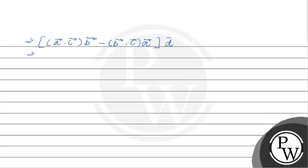(a·c)b - (b·c)a dot product d. So here we have, now we can also take it as (a·c)(b·d) minus (b·c)(a·d).